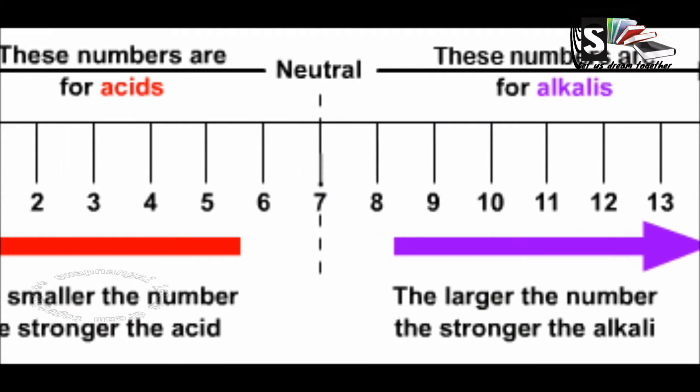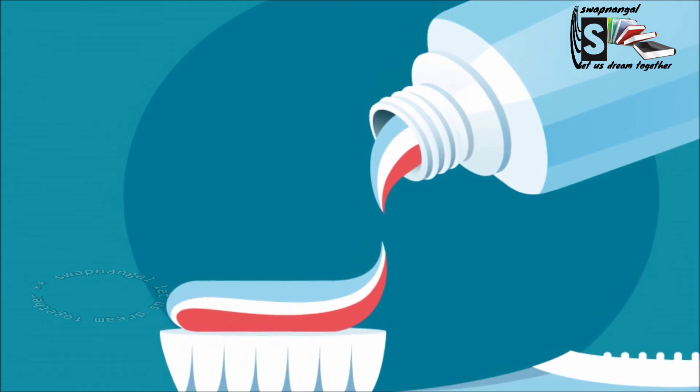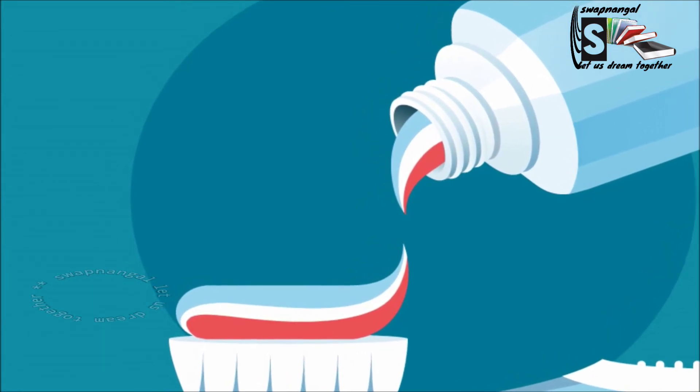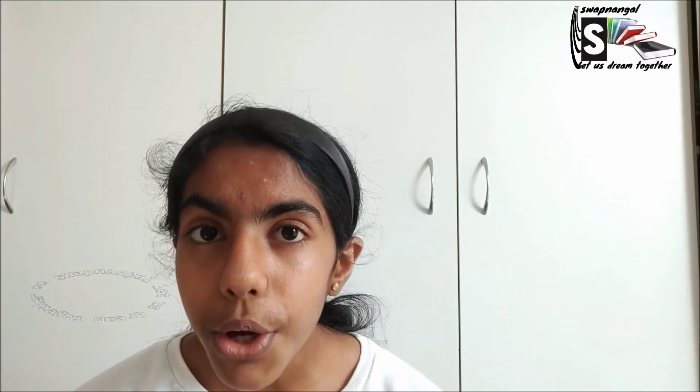You can make a neutral substance by reacting an acid with a base. When we react them, the acid and the base will cancel each other out and form a neutral substance. Toothpaste contains a weak base that cancels out any acids that are in your mouth to make it neutral. Examples of neutral substances include pure water, salt solution, sugar solution and cooking oil.